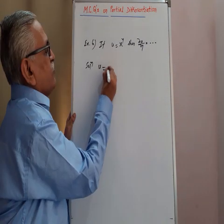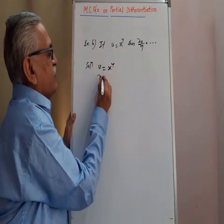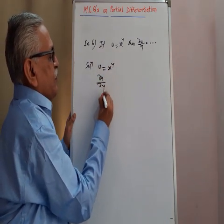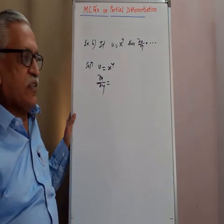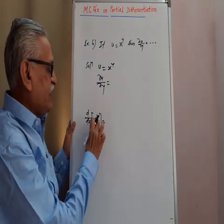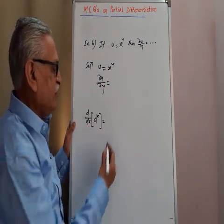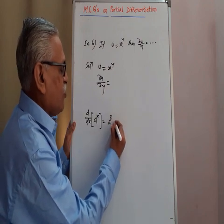To obtain u = x^y, differentiating it with respect to y, keeping x constant. Therefore, the differentiation of a^x is a^x times log of a.